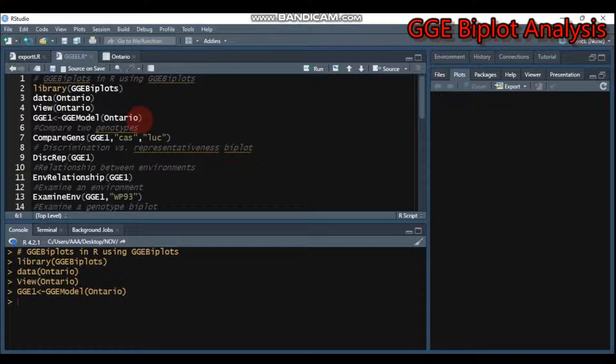The first thing we're going to see is to compare two genotypes by selecting the genotypes you want to compare. In order to do that, you have to use the compare.genes function, then indicate the model. Our model is GGE1, designated by the GGE model Ontario.